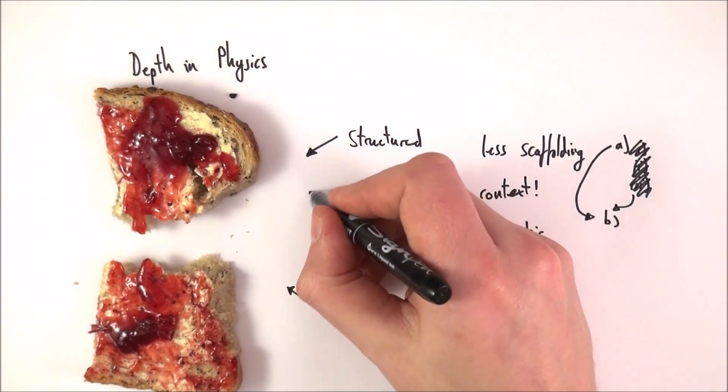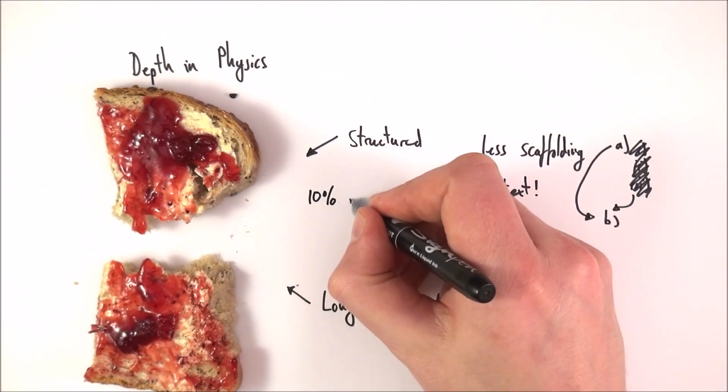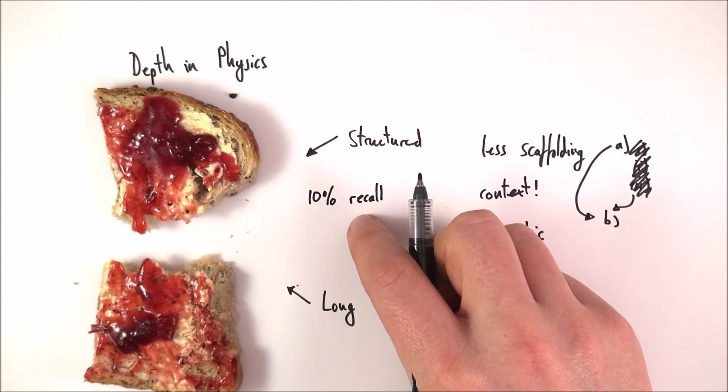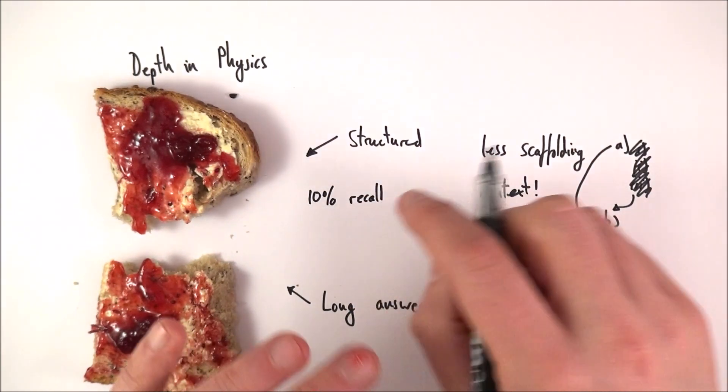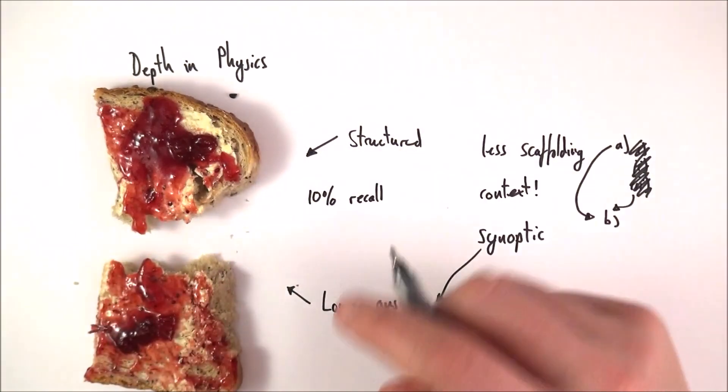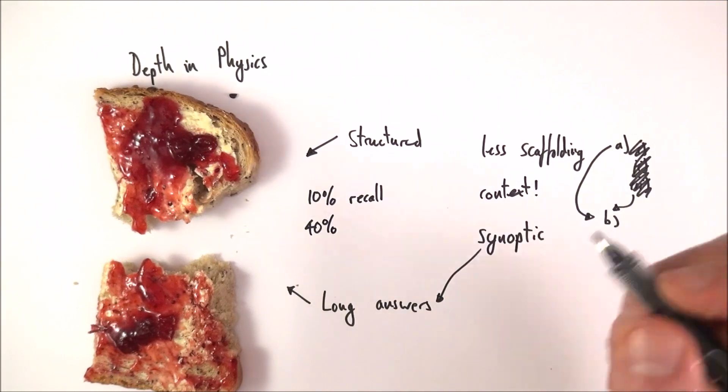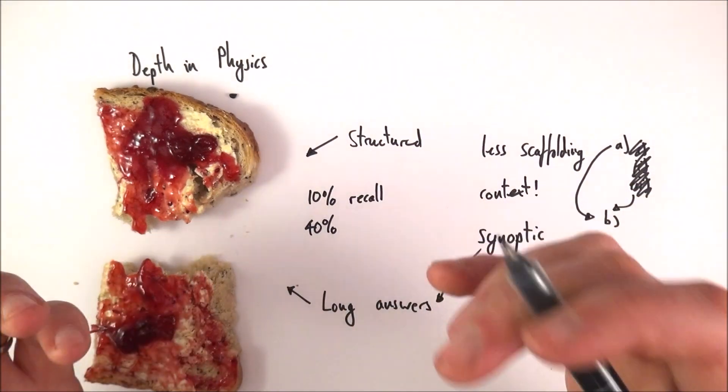And the thing is, the exam—basically about only about 10% is basic recall. So that's your definitions, that's state, you know, what is Newton's first law, define or state what velocity is. That's actually a very small amount. 40% at least is going to be based on your mathematical ability, which is kind of obvious because it's physics, it's a very mathematical subject.